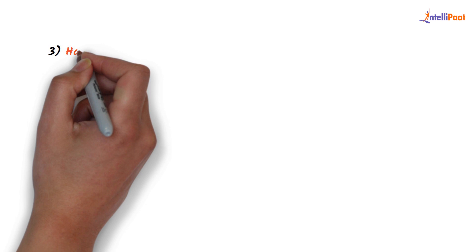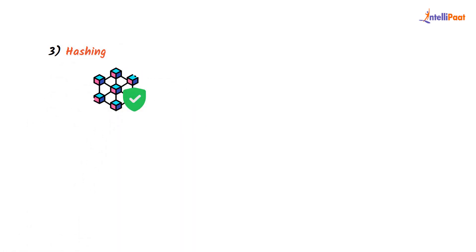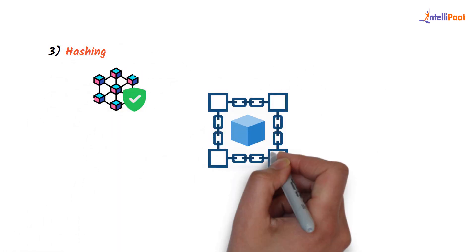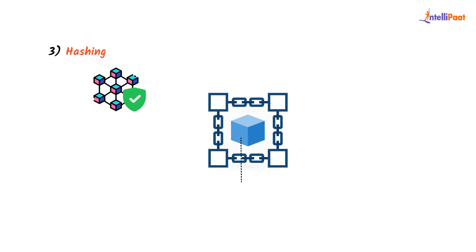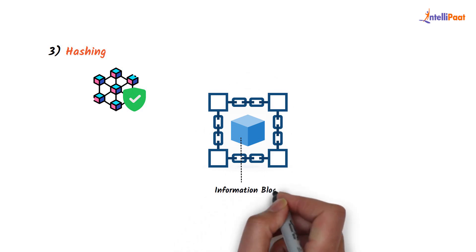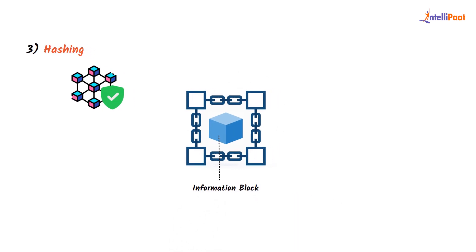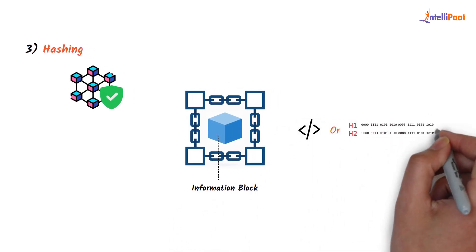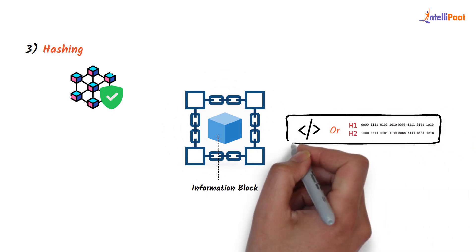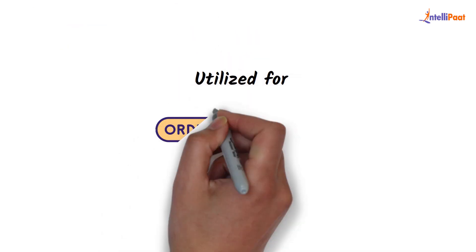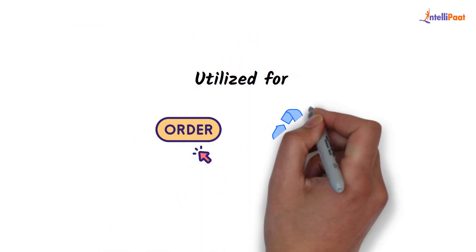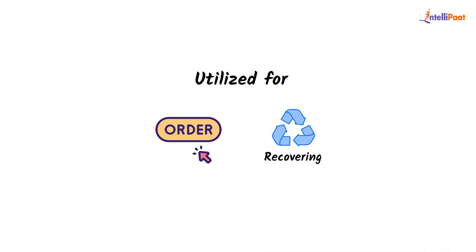The third type is hashing. It is one of the main parts of blockchain-related security. When an information block is added to the chain, a unique code or hash is added to that particular block. Hashing is principally utilized for ordering or retrieving items in a data set, and it also uses different keys for encryption and decryption.